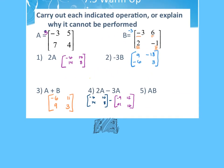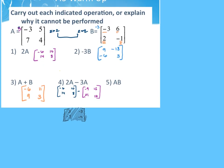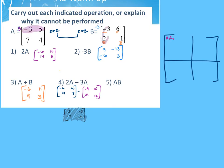Then A times B. A is 2×2 and B is 2×2, so the inner 2s match, which means they can be multiplied, and the outer 2s give us a 2×2 result. The first cell is row 1, column 1: negative 3 times negative 3 plus 5 times 2 gives 9 plus 10, which is 19.